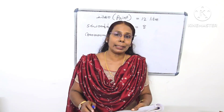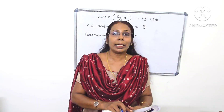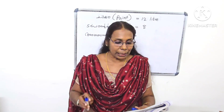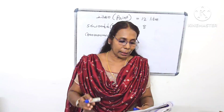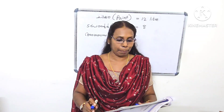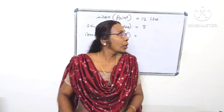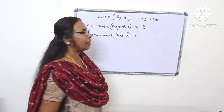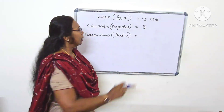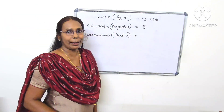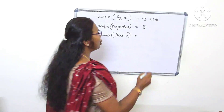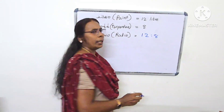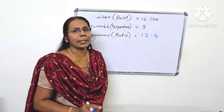With 12 liters of paint, there are also 8 liters of turpentine. With 15 liters of paint, how many liters of turpentine do we need? The ratio of this is 12 to 8.